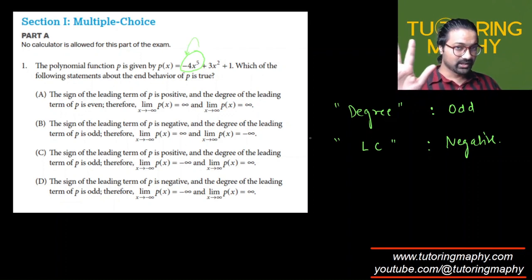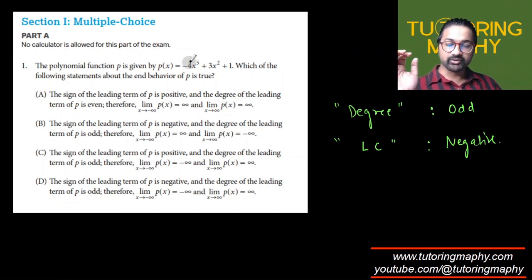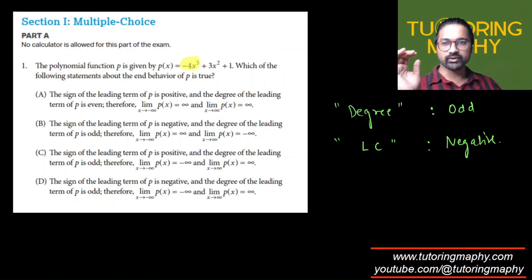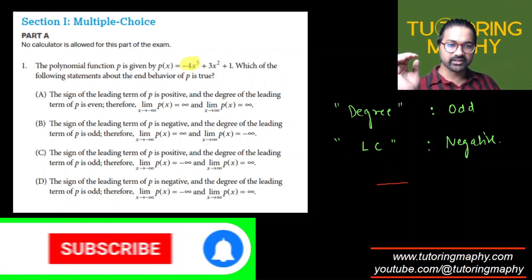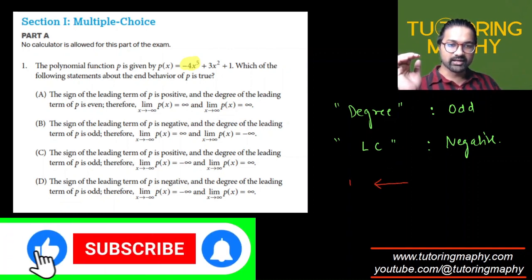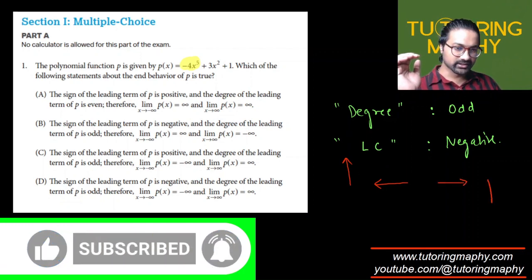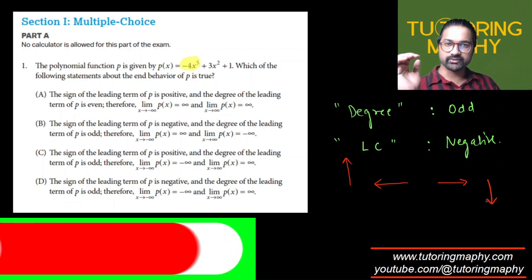Keep in mind that in any polynomial, the end behavior is determined only by the leading term — the other terms can just be ignored. So as x goes towards negative infinity, the y-value increases, and as x goes towards positive infinity, the y-value decreases.